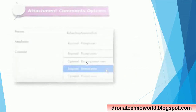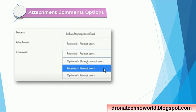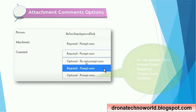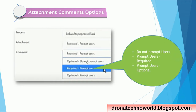The comment section works similarly. When attaching a document, it is sometimes required to provide a comment explaining what kind of document it is or its purpose. There are three options: optional do not prompt user, required prompt user, and optional prompt user. In real practice, providing an optional prompt user is the best option in most cases, but if a comment is mandatory, choose required prompt user.